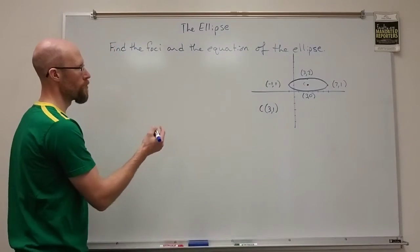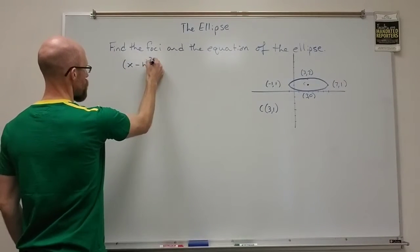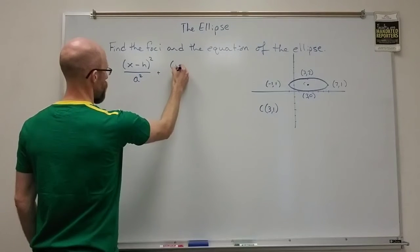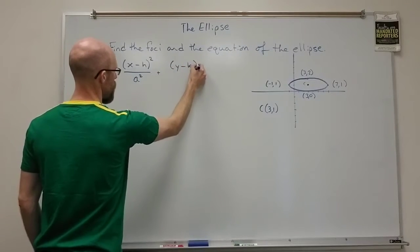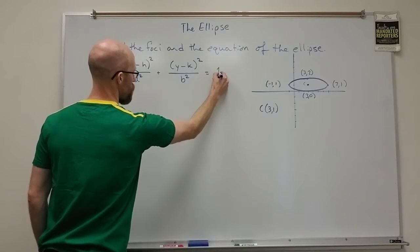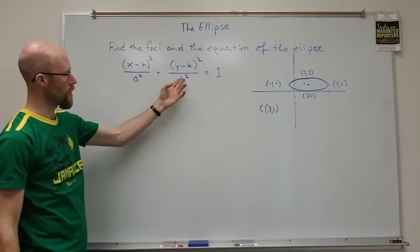And we know the general form of an ellipse: x minus h squared over a squared plus y minus k squared over b squared equals 1.